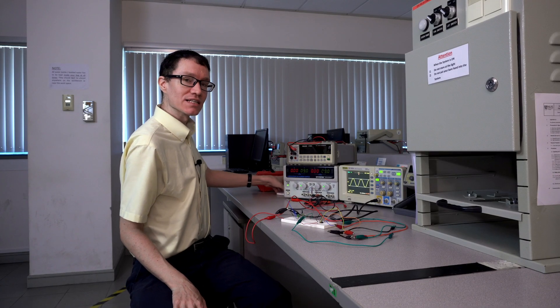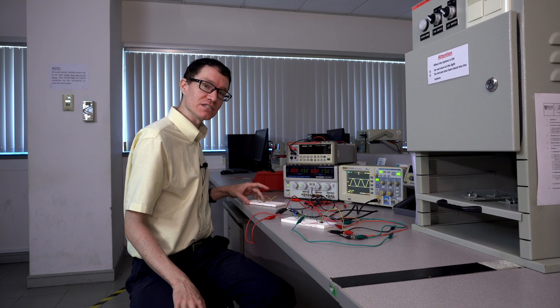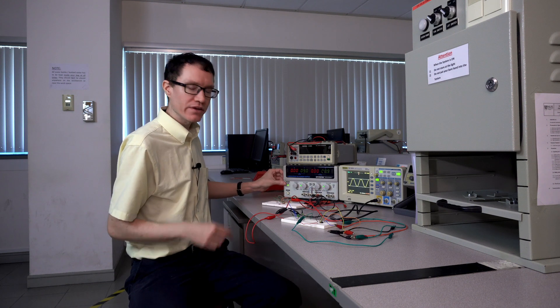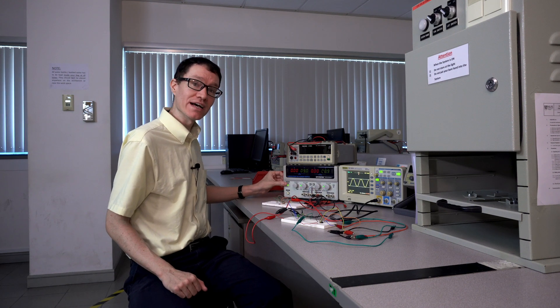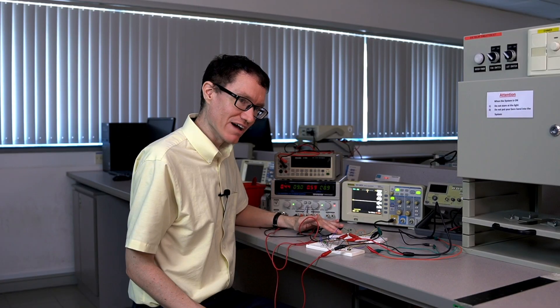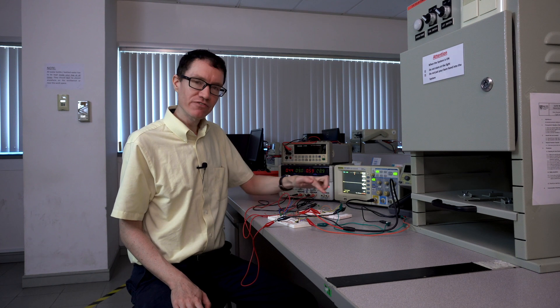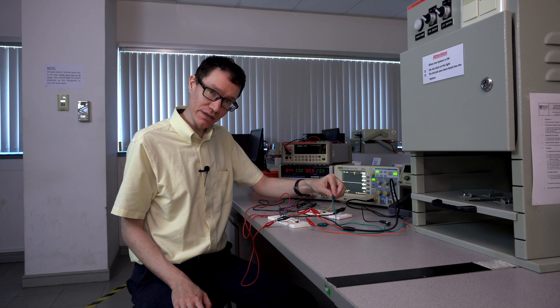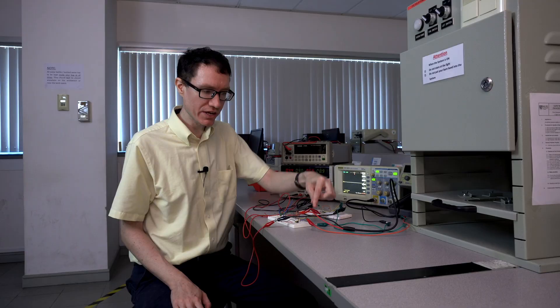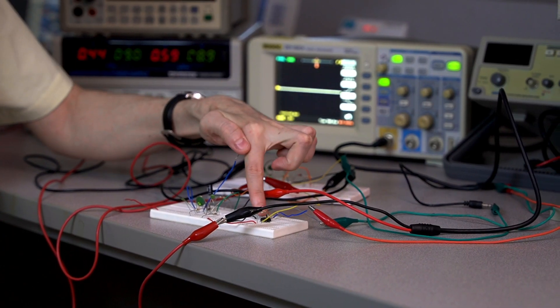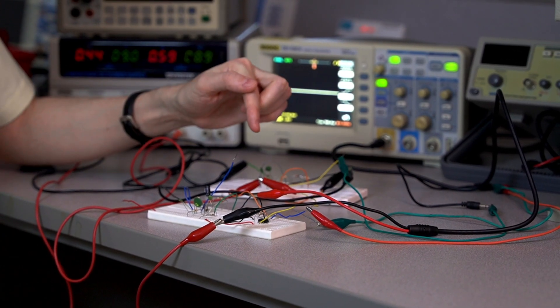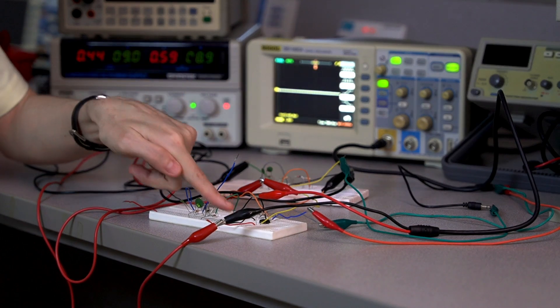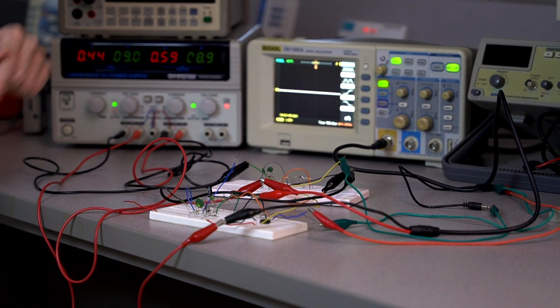I have here the Wien Bridge oscillator that we put together in a previous video. I'm going to go ahead and make all of these connections that we've just outlined in the circuit diagram, and then we'll take a look at the output. So here I have our Wien Bridge oscillator that we put together in a previous video. I have connected the output pin at our Wien Bridge oscillator over here through some wires to an audio buffer with a gain of 2. The output of the buffer then runs into the power line of our Colpitts oscillator.